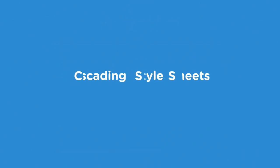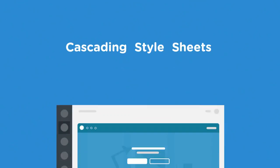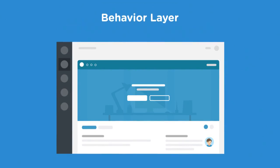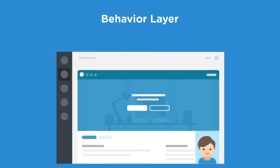CSS, or cascading style sheets, provides the presentation layer and creates the visual style of web pages using colors, typography, layout, and more. The behavior layer is handled by JavaScript to add interactivity to the page — for example, popping up a larger image when a user clicks a small image.